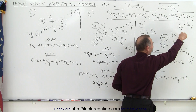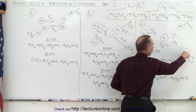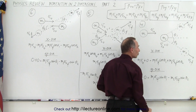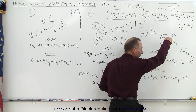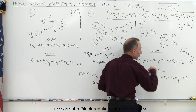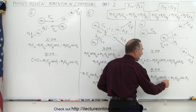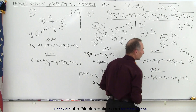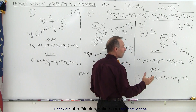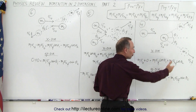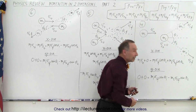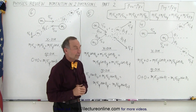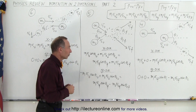And here the y component of M2's momentum is negative — it's in the down direction — so it's minus M2 V2 final times the sine of that angle. So now if two of those four unknowns are given, with the two equations we can solve for the other two unknowns.